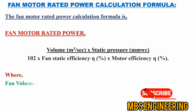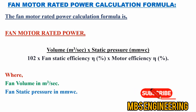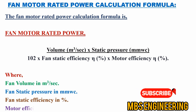Where: the fan volume is in meter cubes per second; the fan static pressure is in millimeters of the water column; the fan static efficiency is in percentage; and the fan motor efficiency is in percentage.